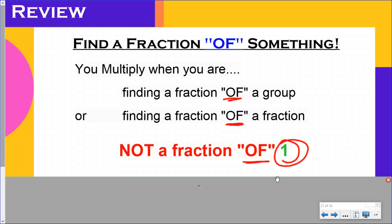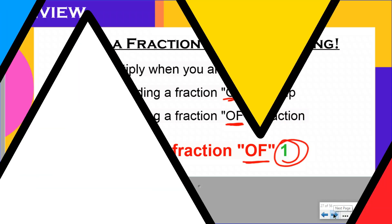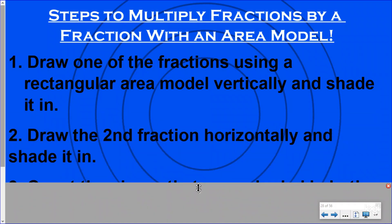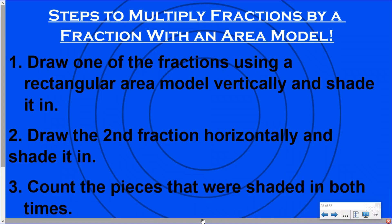Let's jump into our steps for how we can multiply fractions times fractions using area models. Step number one, you are going to draw one of the fractions using a rectangular area model, splitting it with lines going vertically, and then shade in your fraction. Step number two, you're going to draw the second fraction using horizontal lines and shade it in. And then step number three, you're going to count the pieces that were shaded in both times.